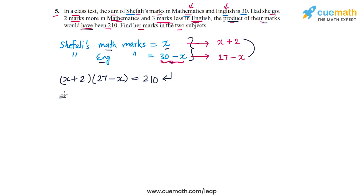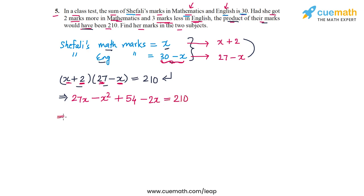Let's expand the product on the left-hand side. We have x times 27, which is 27x; x times negative x, which is negative x squared; 2 times 27, which is 54; and 2 times negative x, which is negative 2x. This equals 210. Combining like terms gives us negative x squared plus 25x plus 54.